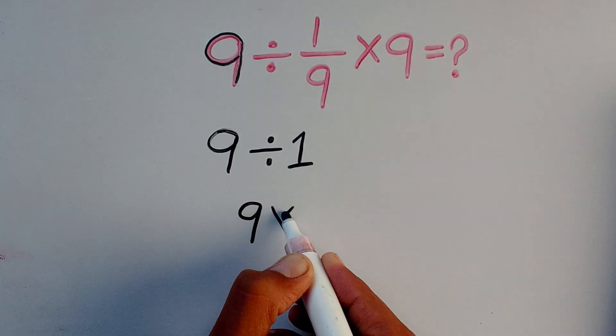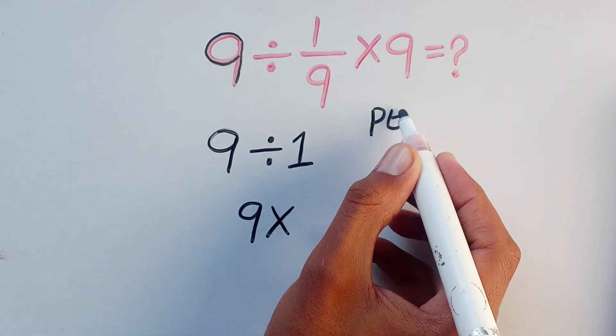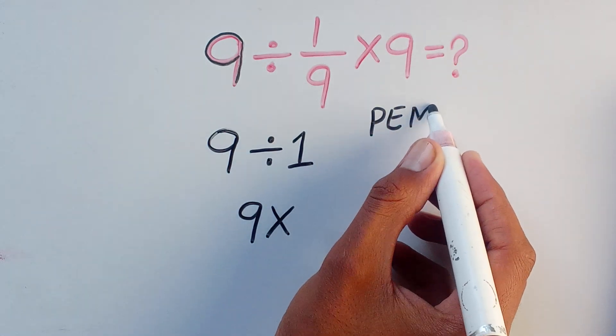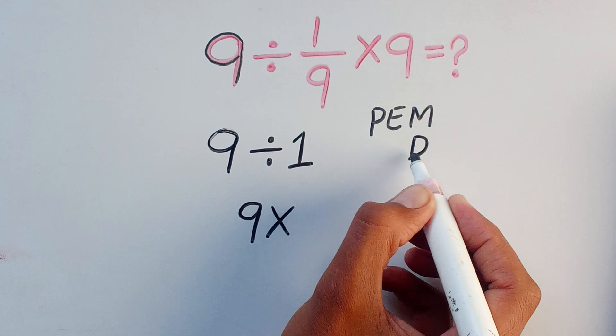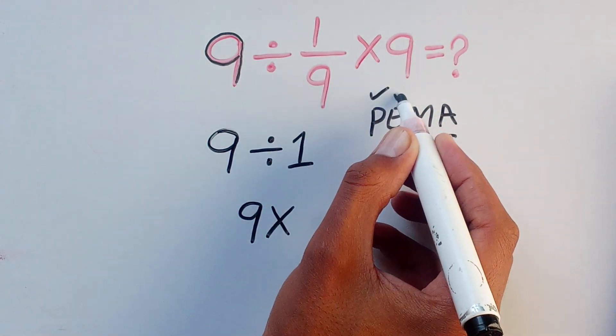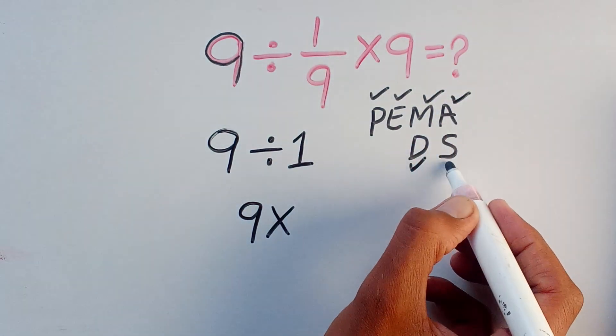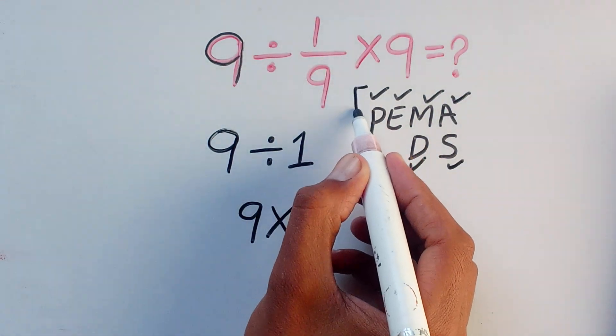But this answer is wrong because of the order of operation, which is called PEMDAS rule. According to PEMDAS rule, first we can solve parentheses, then exponent, then multiplication and division, after that addition and subtraction.